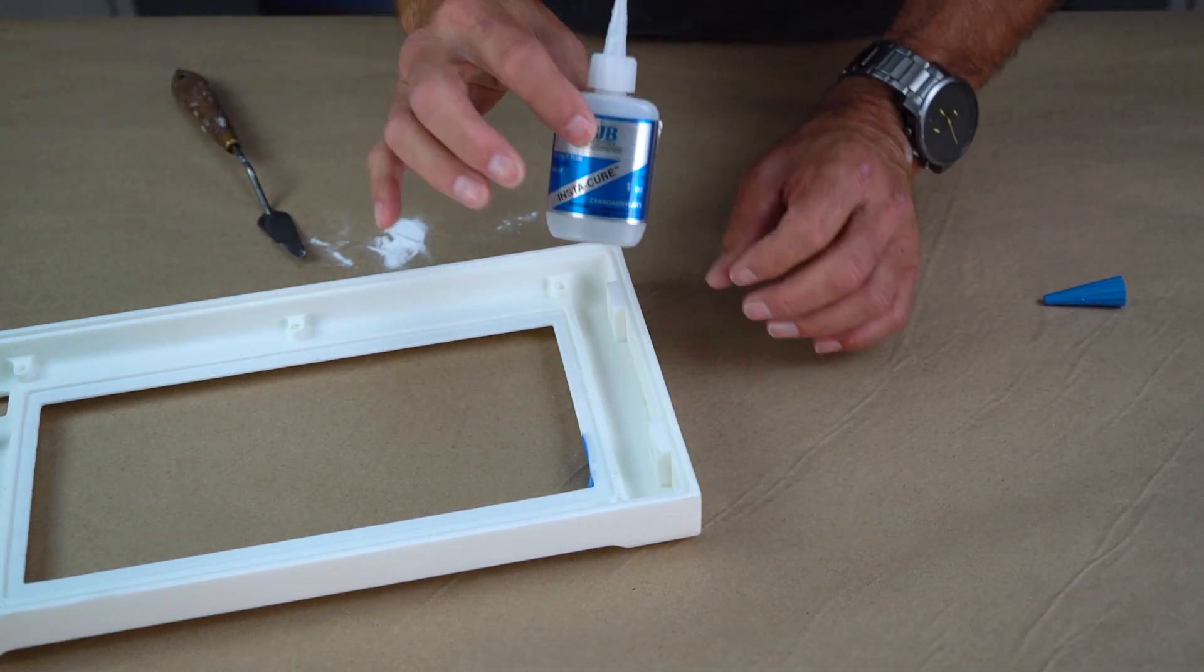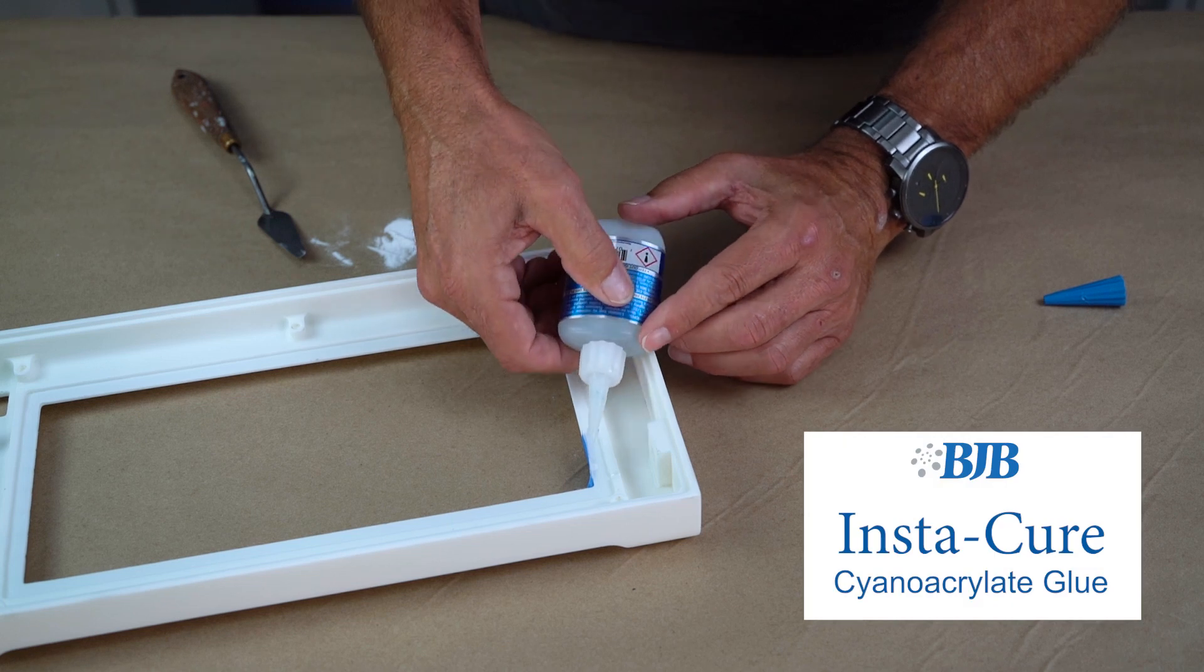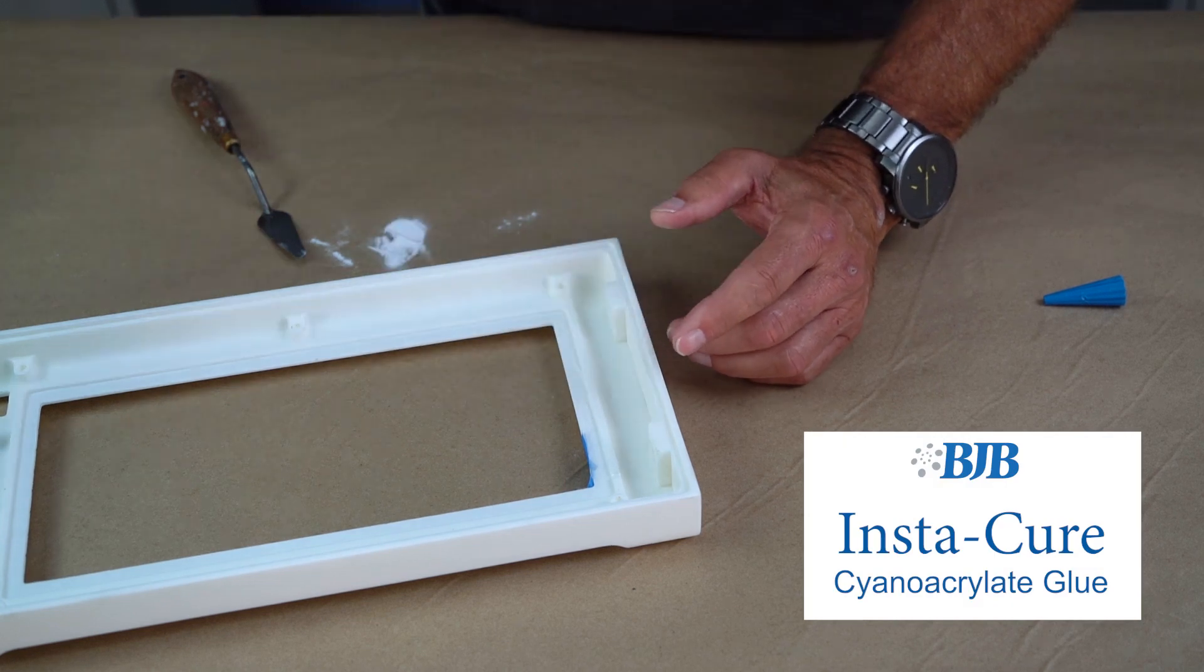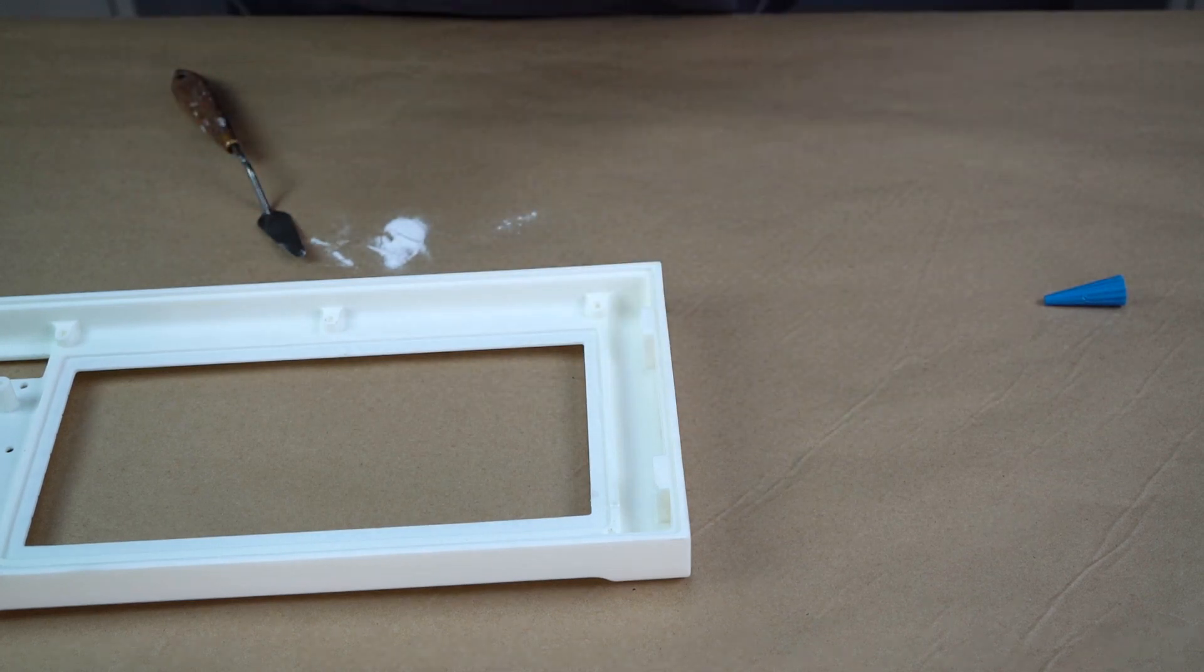I then apply a drop or two of thin CA glue which wicks into the baking soda and hardens instantly. You can now sand this area if needed.